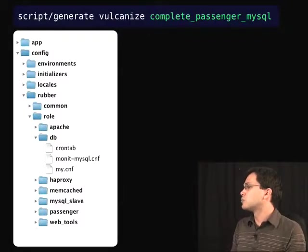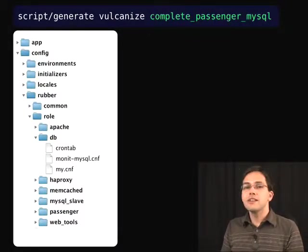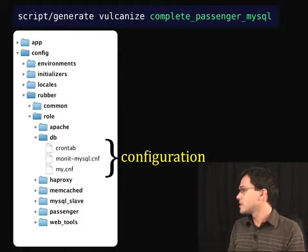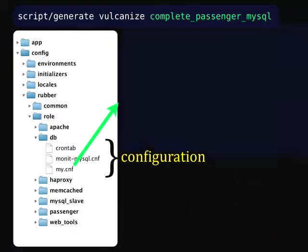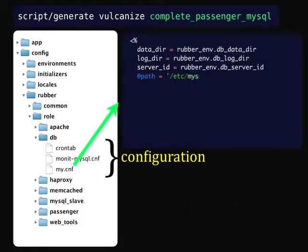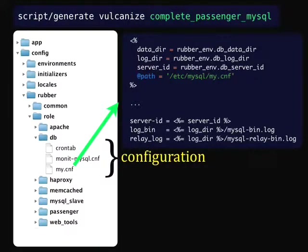If we took a look inside the role directory inside the Rubber directory, we would start to see configuration files that look familiar. As you can see here are the MySQL configuration files. If we looked inside the my.cnf file, we would see that at the top of this file is basically ERB, grabbing data out of the YAML files, which correspond with the data directory, log directory, and the path — which is where this file goes in the server.